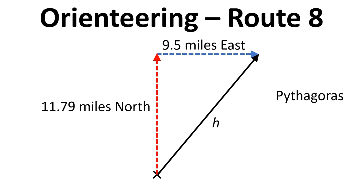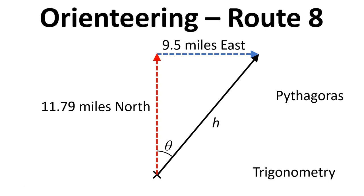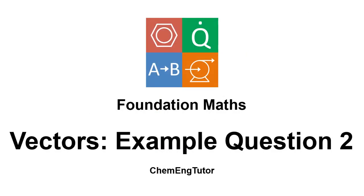We can now use Pythagoras to work out the distance travelled directly from the start point to the finish point, and use trigonometry to work out the angle. I'll let you calculate those things, but we have now set up the question so that the values can be calculated and the answer can be solved. That's been another video to explain how to solve an example question using vectors.